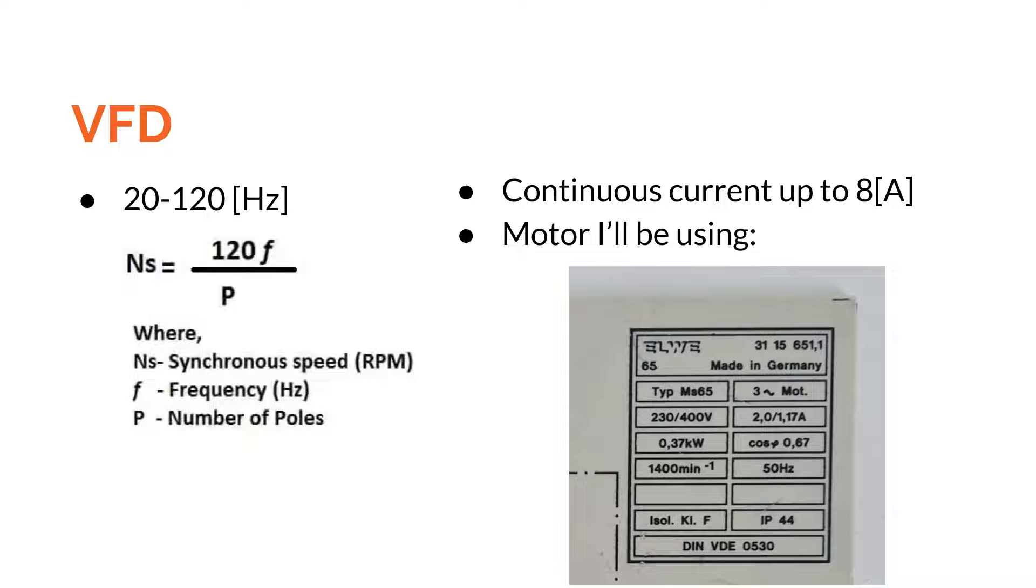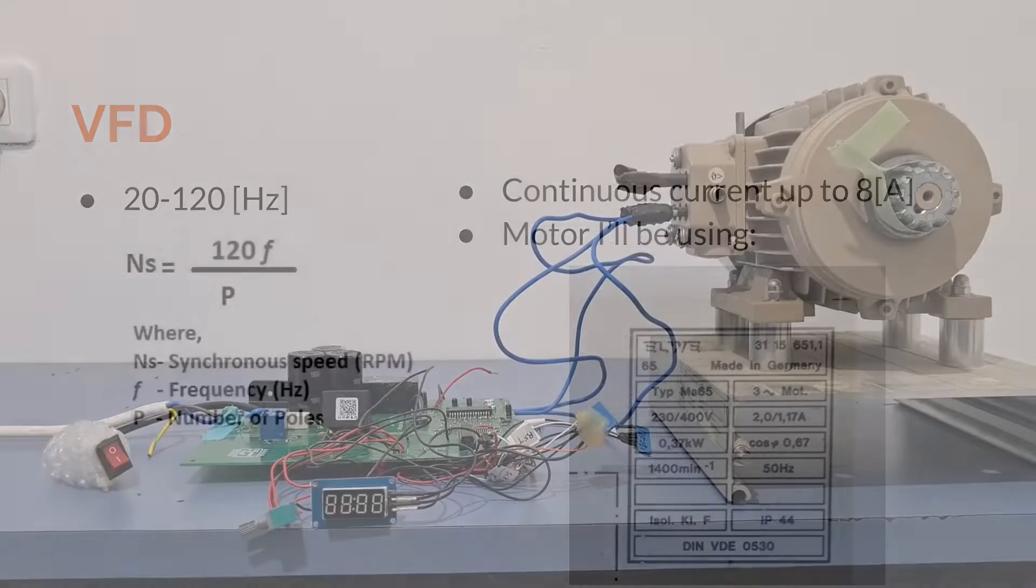This VFD's speed range is 20 to 120 Hz, which will translate to RPM using this equation. And it's rated to run continuously at up to 8 amps.